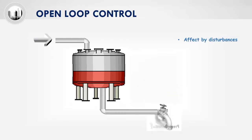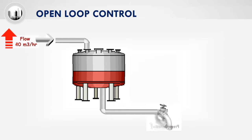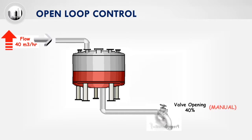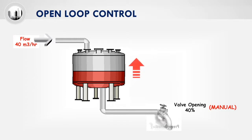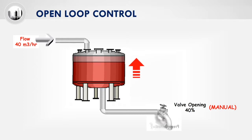The example in this video demonstrates the effect on the tank level when the inlet flow of the tank increases. Since the control loop is in manual, the valve opening will remain fixed at 40% even though the inlet flow has increased. This will result in the tank level increasing. Without timely intervention of the operator, this could result in a hazardous scenario such as tank overflow.